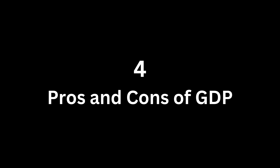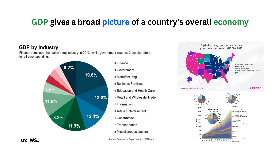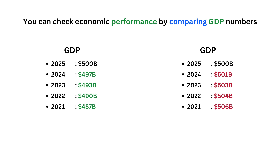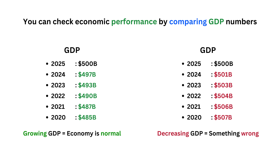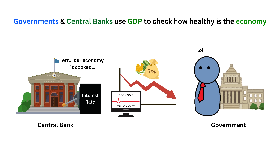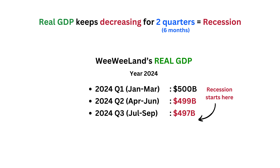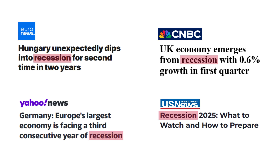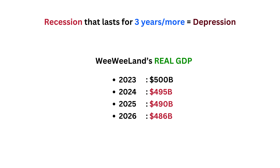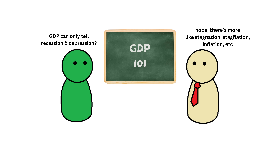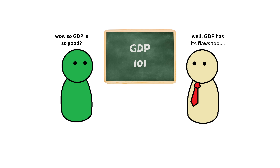GDP gives a broad picture of a country's economic activity. By comparing it with previous GDP numbers, you can tell whether the economy is growing or shrinking. Governments and central banks use GDP to check how healthy the economy is. For example, if a country's real GDP drops for two consecutive quarters — six months in a row — it could indicate a recession. If the recession continues for three or more years, it could become a depression, like the Great Depression in the US during the 1930s.